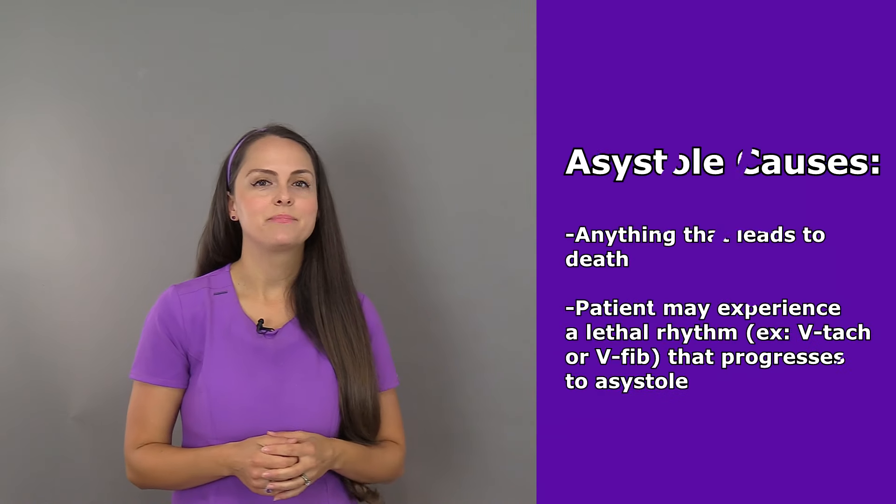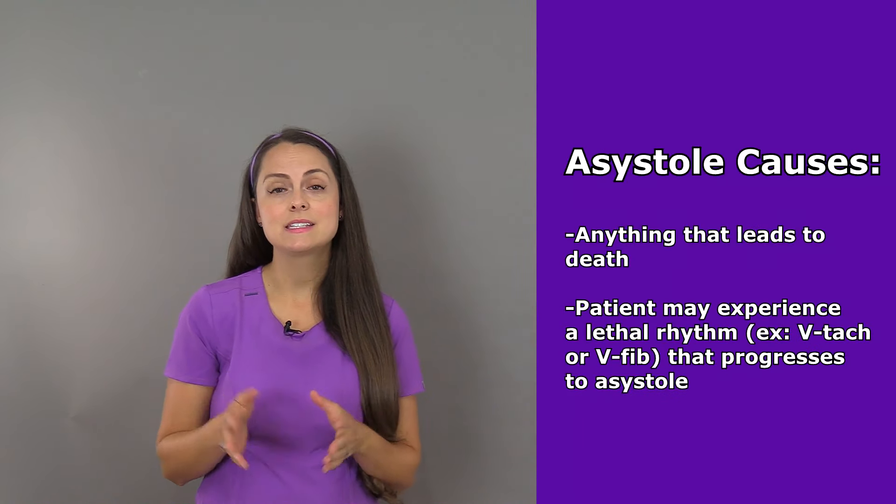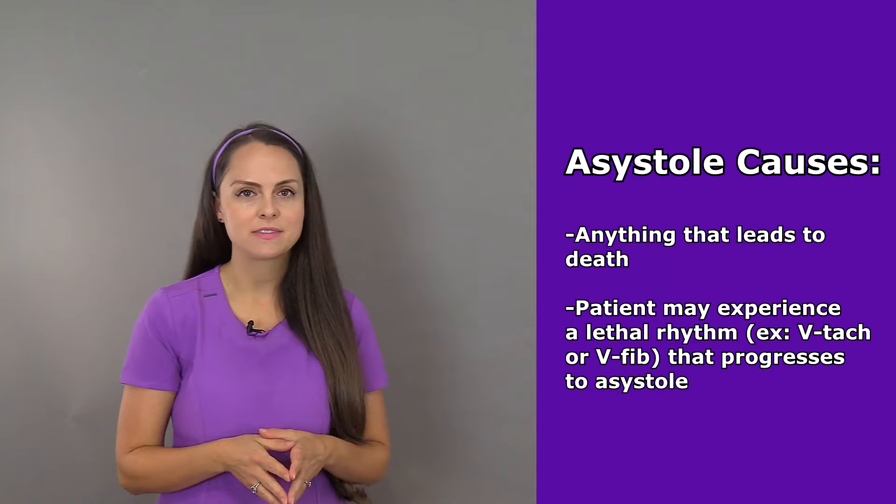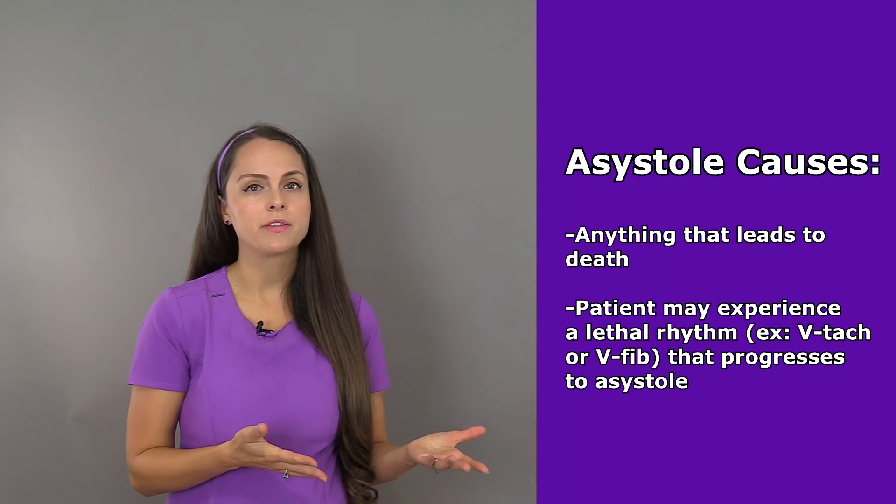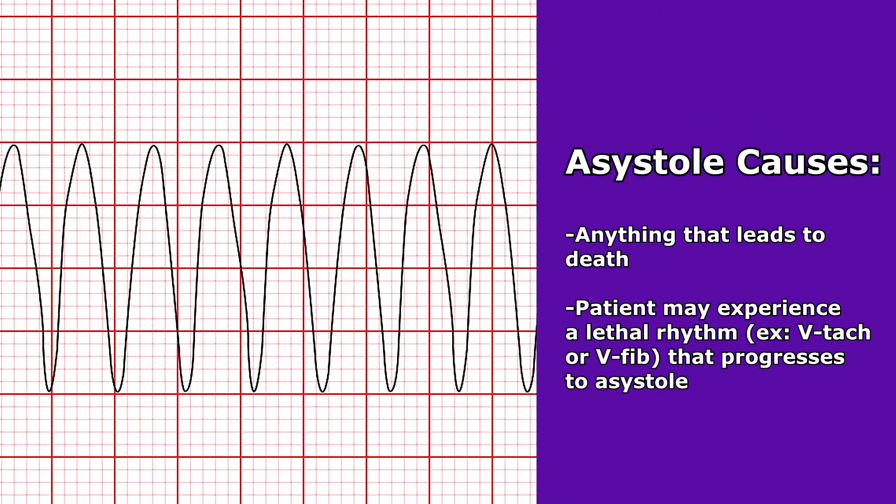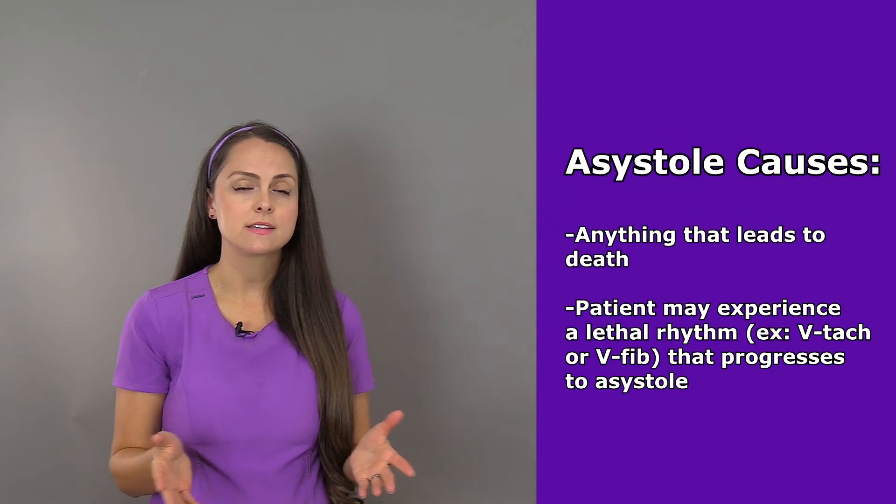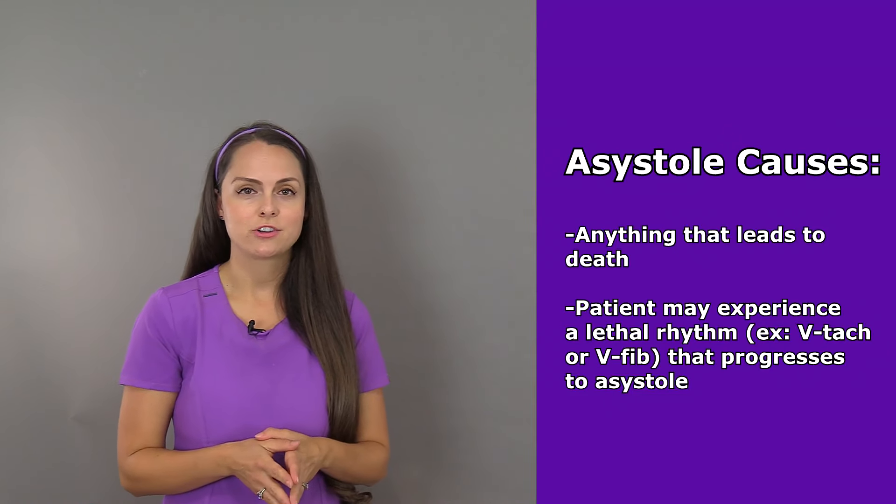What can cause asystole? Really anything that leads to death. Many times what happens is that the patient is in a lethal rhythm like V-tach or V-fib and it's untreated and it progresses to asystole where the heart quits contracting.